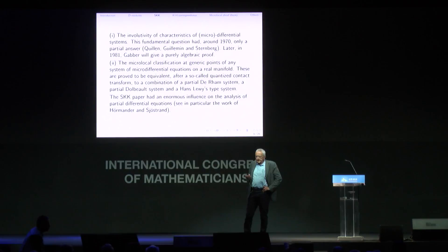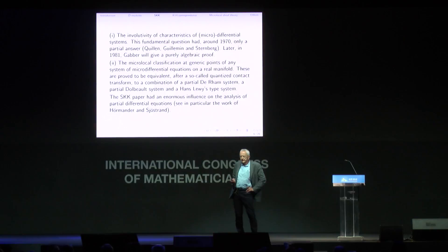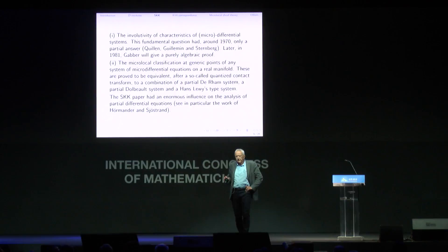Another fundamental result of SKK was the classification of general systems of PDE. In the complex case, one can prove that at a generic point, after a so-called quantized contact transformation, such systems are equivalent to a partial de Rham system. In the real case, it is more difficult: it is a mixture of three kinds of systems — de Rham, Dolbeault, and equations of Hans Lewy type.